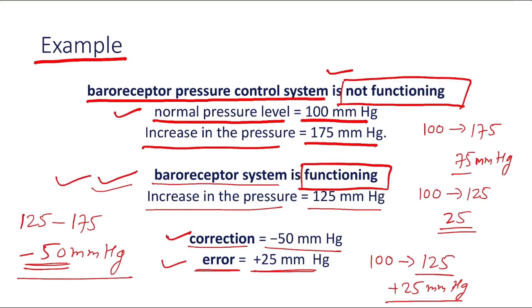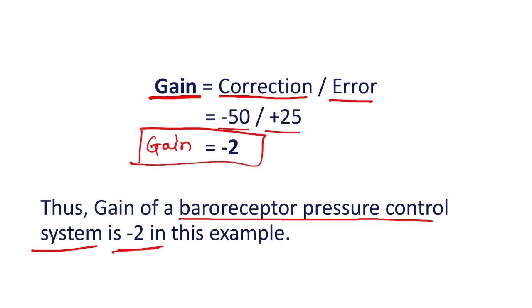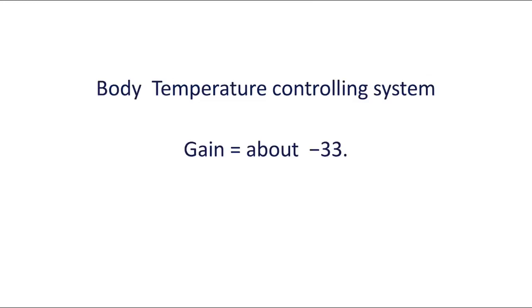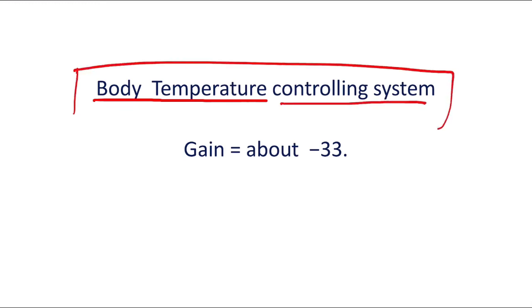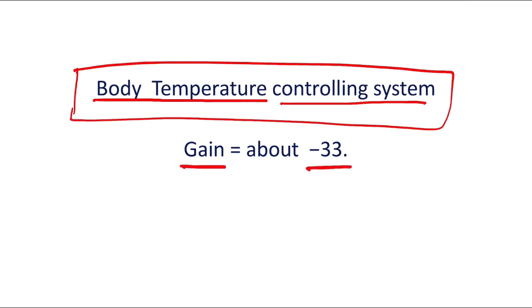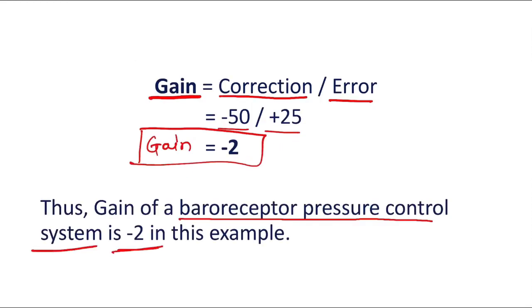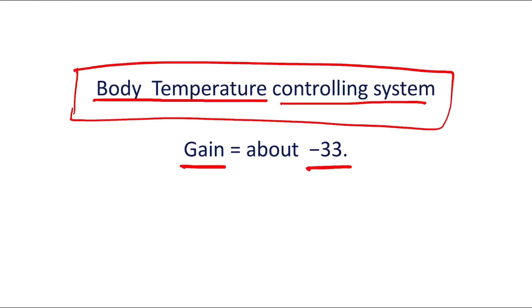The important things to understand are what is correction, what is error, and how to calculate them — this example is very important. There can also be a question about which system has the highest gain: it is the body temperature controlling system, which has a gain of about minus 33. In this example the gain was minus 2, but the body temperature controlling system has a gain of about minus 33. This is all about the gain of a control system.